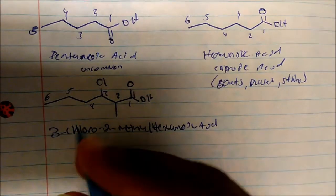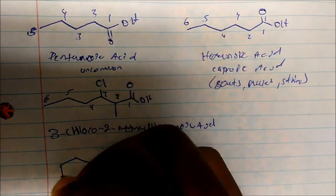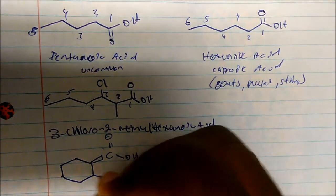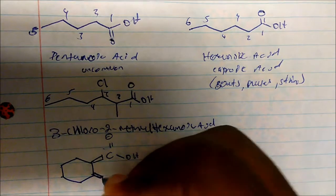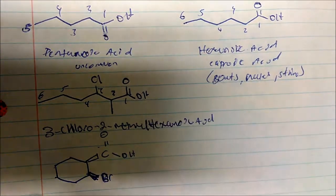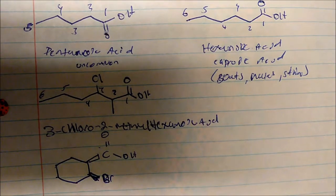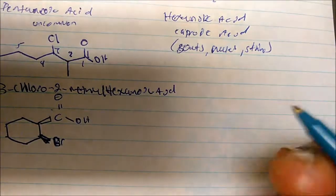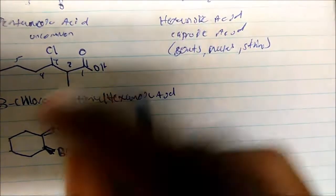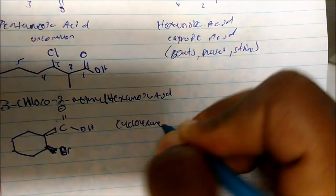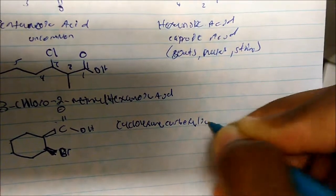Now how about cyclic carboxylic acids? With cyclic carboxylic acids it gets a little bit different. We have a cyclic carboxylic acid here; the parent will actually be cyclohexane carboxylic acid. So this is how we deal with cyclic compounds. The parent name would be cyclohexane carboxylic acid.